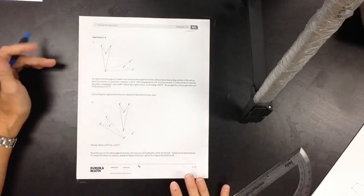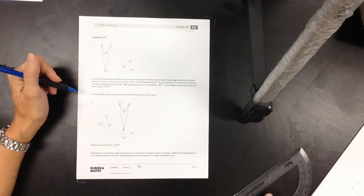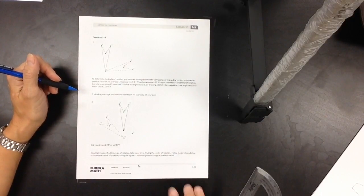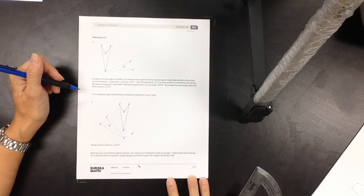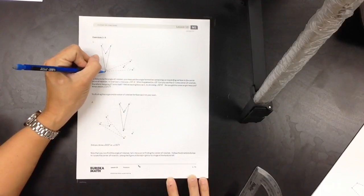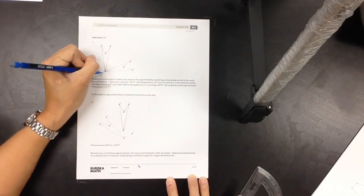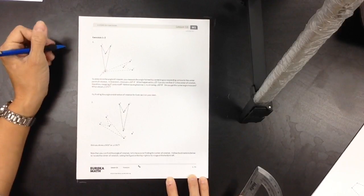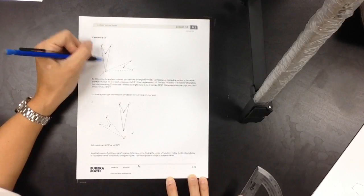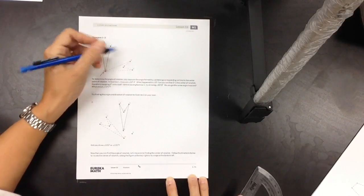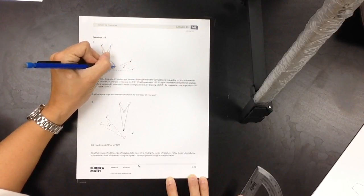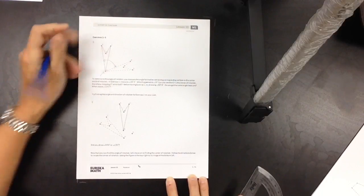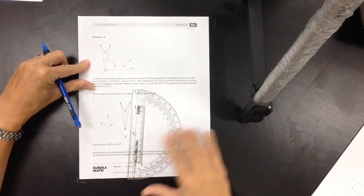So let's do one. So for exercises one through three, to determine the angle of rotation, you measure the angle formed by connecting corresponding vertices to the center point rotation. So in exercise one, D is our center point rotation. So we're going to measure A, D prime, A prime. We're going to measure this angle right here using our protractor.